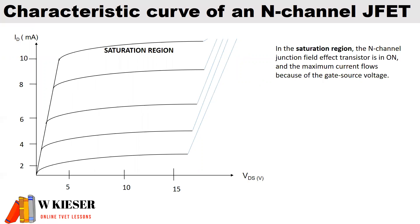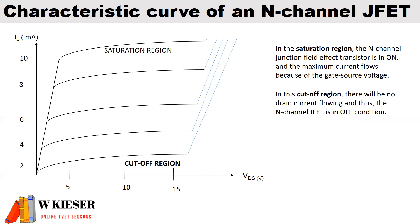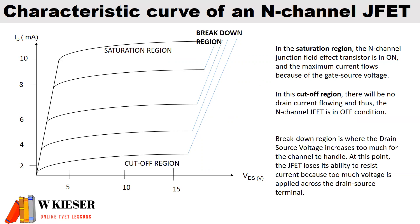In this load characteristic curve of an N-channel JFET, we'll be looking at three different regions. The first is the saturation region, where the N-channel junction field-effect transistor is on and maximum current flows because of the gate-source voltage. In the cutoff region, there will be no drain current flowing and thus the N-channel JFET is in the off condition. In the breakdown region, the drain-source voltage increases too much for the channel to handle, and the JFET loses its ability to resist current because too much voltage is applied across the drain-source terminal.